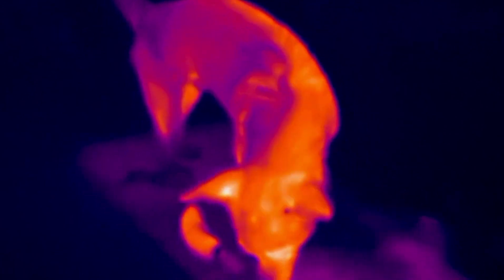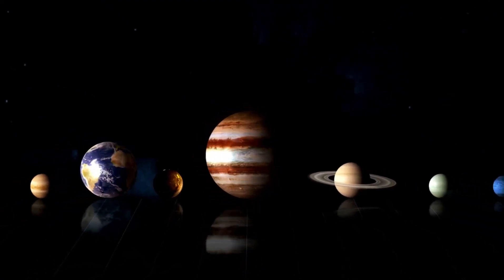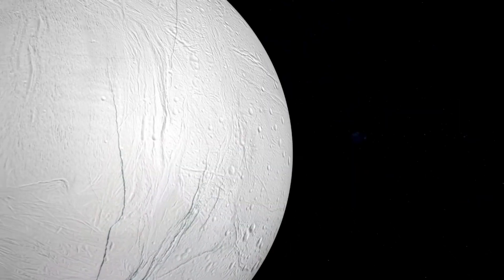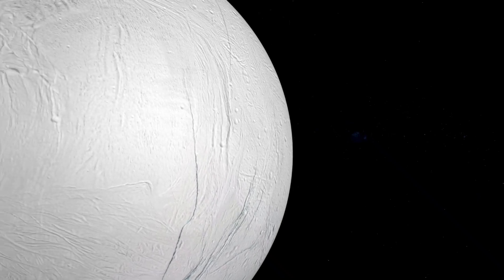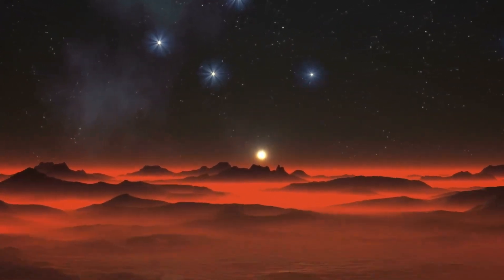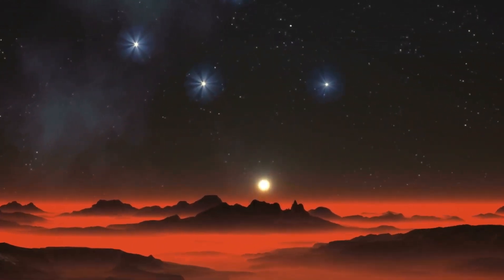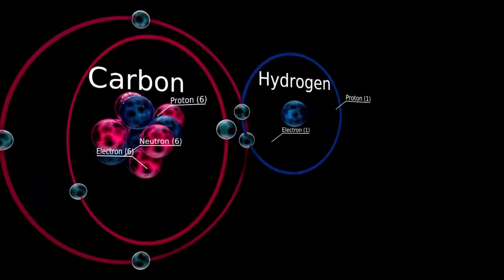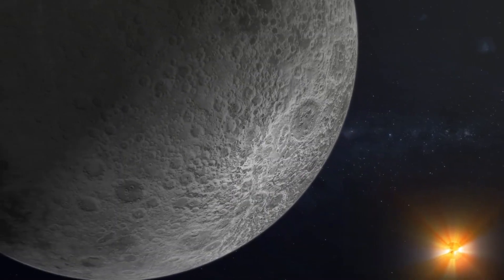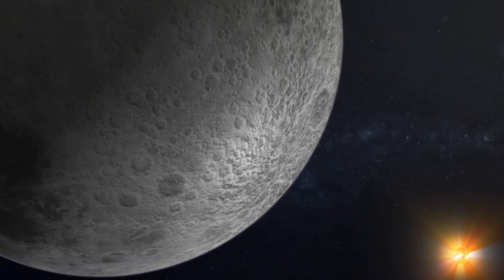If a small, distant world like Pluto can have the ingredients for life, what about other icy moons or exoplanets orbiting far from their stars? Could Europa or Enceladus, moons in our own solar system with subsurface oceans, also harbor life? And what about planets orbiting dim red dwarf stars, where warmth in the sun is a requirement for habitability? The discoveries on Pluto have redefined the boundaries of what we consider habitable. Scientists now believe that life doesn't need a sun to thrive. It needs energy, water, and the right chemistry. These conditions could exist in countless places across the universe, from icy moons to rogue planets floating freely in space.